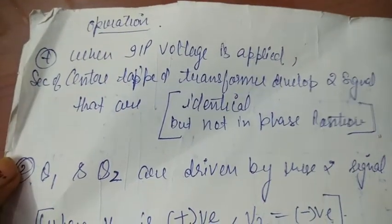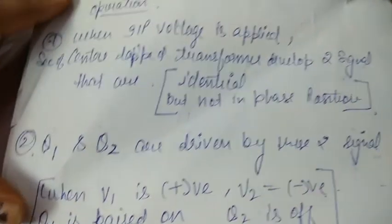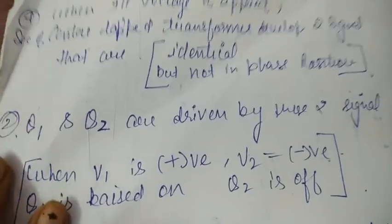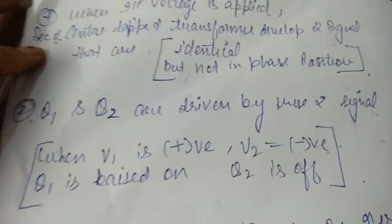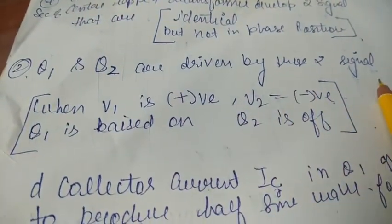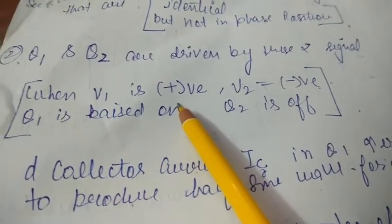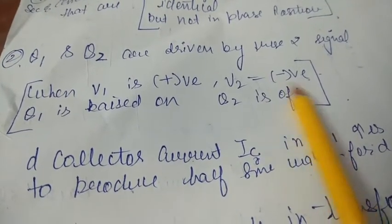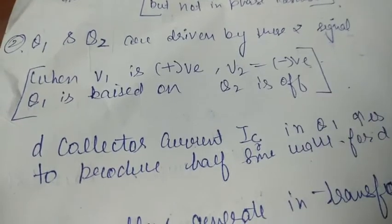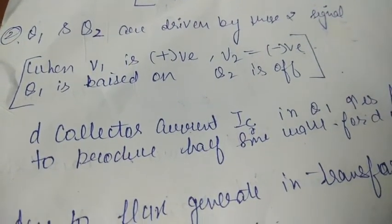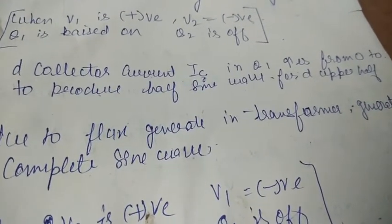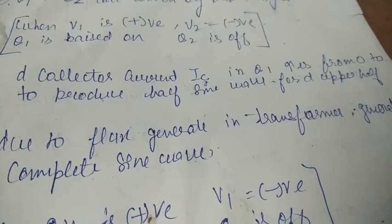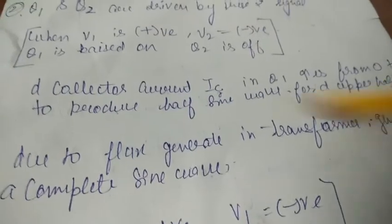Now I will explain the operation. If we apply input voltage, the center-tapped transformer develops two signals that are identical but not in phase. The two signals drive Q1 and Q2 respectively. In summary: when V1 is positive, V2 will be negative — Q1 will be ON and Q2 will be OFF, producing a positive half-cycle. When V2 is positive, Q1 is biased ON and Q2 is OFF, and the collector current flows accordingly.